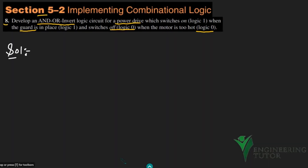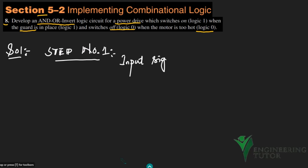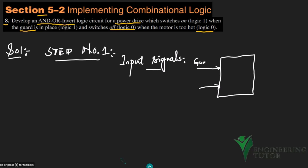Step one of solving this kind of question is to write it in our own language and identify the inputs. If this is a block, we have two inputs: the first is the guard, and the second is whether the motor is cool or not — MC.